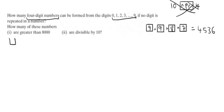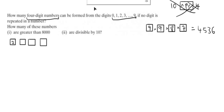How many of those four-digit numbers are greater than 8,000? The first digit must be 8 or 9, so there are 2 options. For the next digit there are 9 left, then 8, then 7. Multiplying 2 × 9 × 8 × 7 gives 1,008.